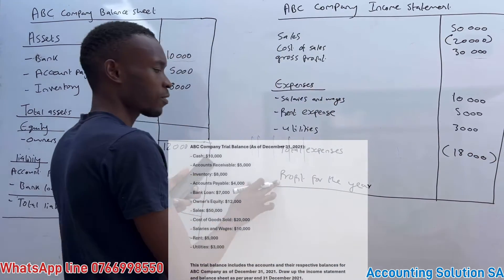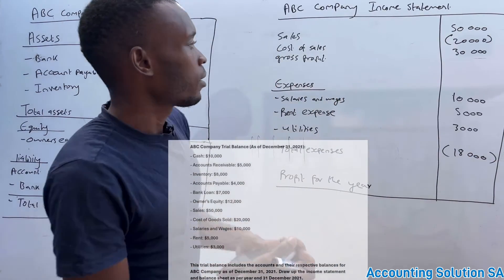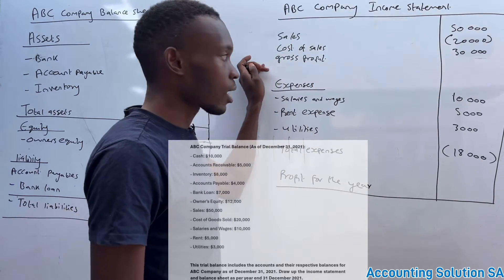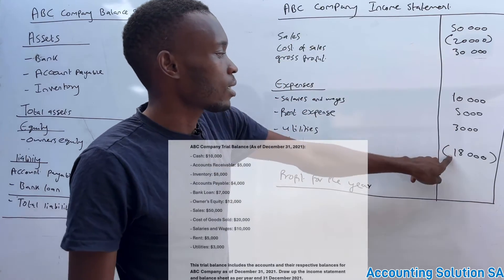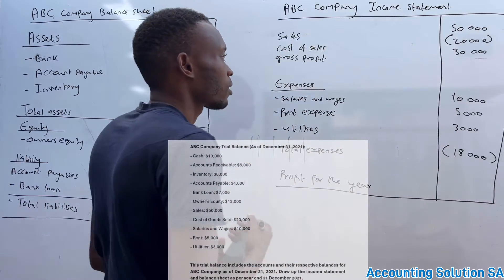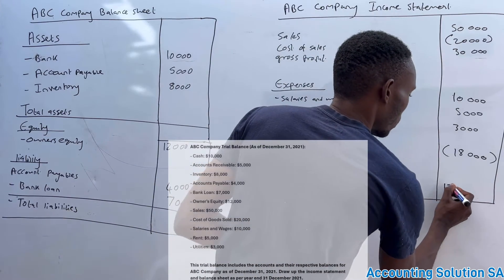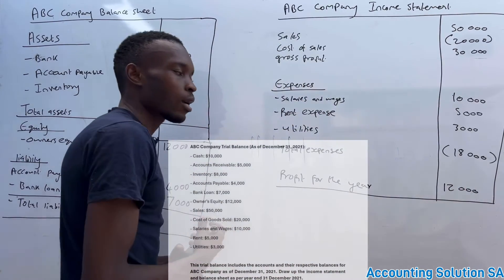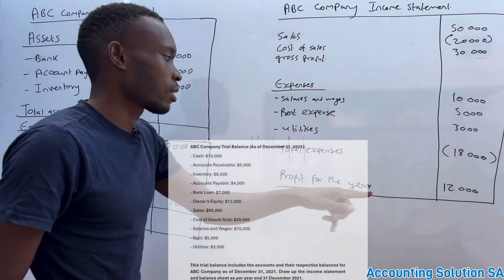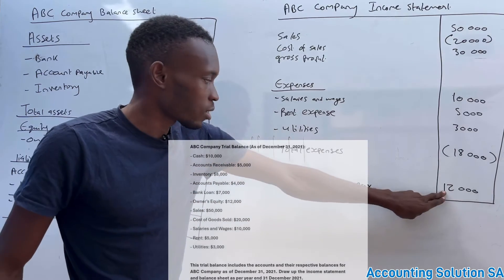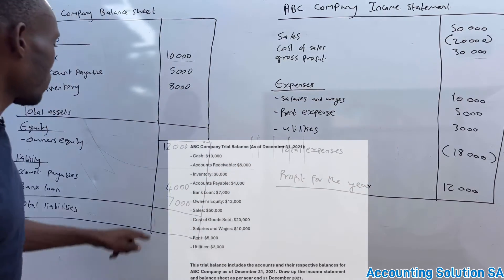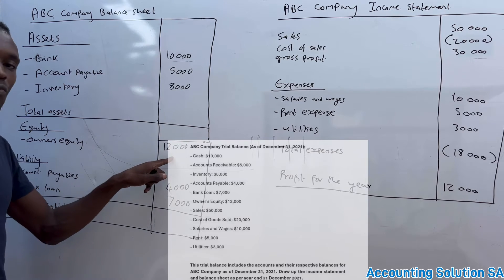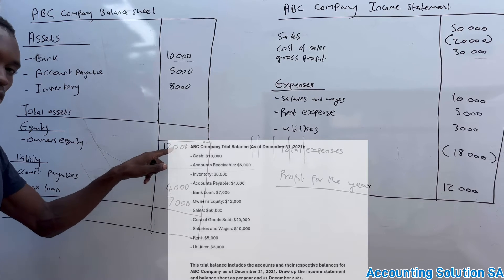Our profit for the year: since we don't have any other income, it's gross profit of 30,000 minus total expenses of 18,000, giving us 12,000. This profit for the year of 12,000 must match the owner's equity of 12,000.